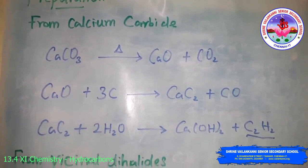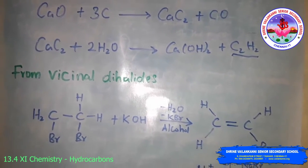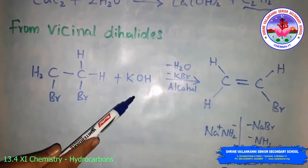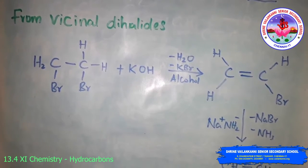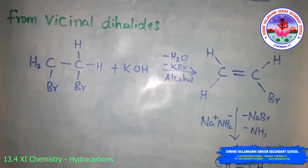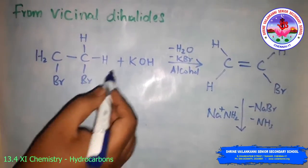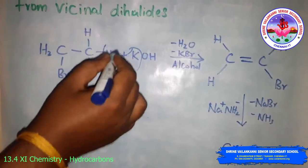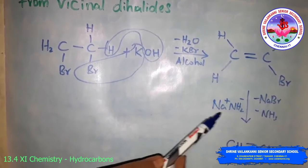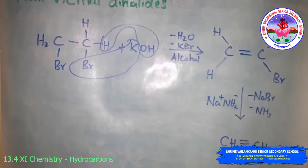The next method is preparation from vicinal dihalides. The vicinal dihalide on treatment with alcoholic potassium hydroxide undergoes dehydrohalogenation. One molecule of hydrogen halide is eliminated to form a vinyl halide (alkenyl halide), which on further treatment with soda amide gives alkyne. Removal of KBr and water, then removal of sodium bromide and ammonia, gives the ethyne molecule.